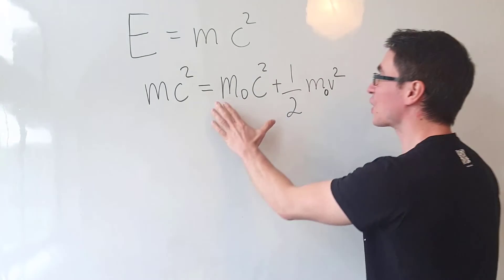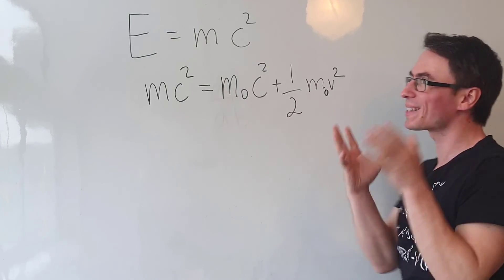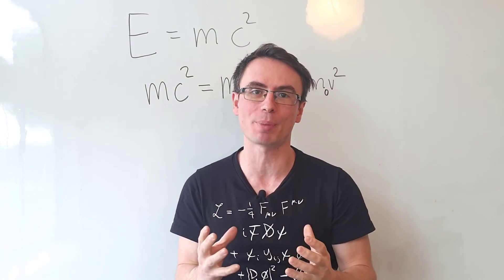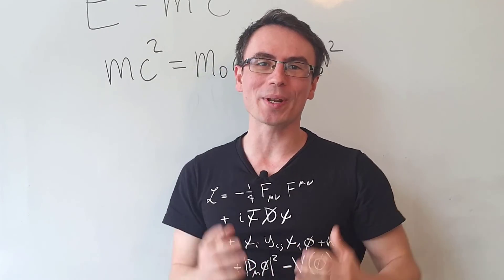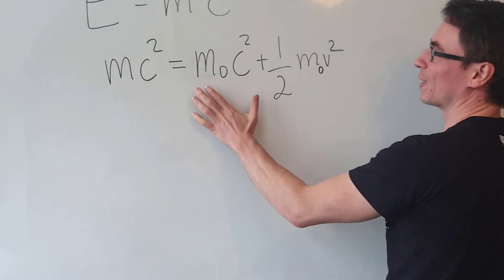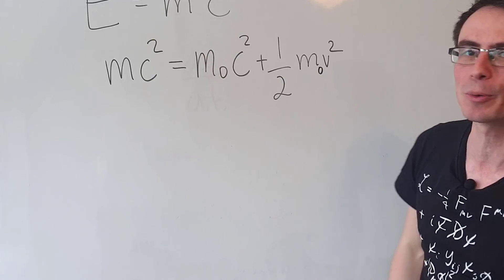Einstein interpreted this large constant term as an intrinsic part of the energy of the body and this is now known as the rest energy, with the total energy being equal to mc squared.